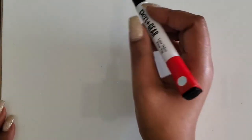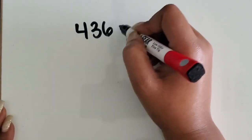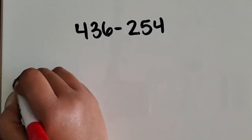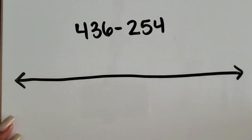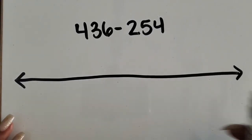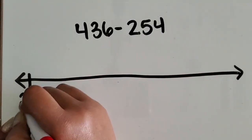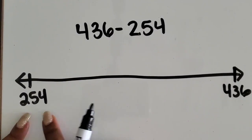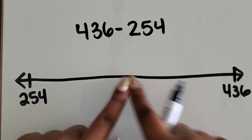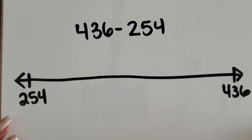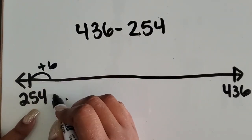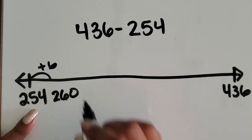Now let's look at how to add in order to subtract. The expression we're using is four hundred thirty-six minus two hundred fifty-four. We're going to use an open number line as our tool. This time I'm going to place both numbers on the number line, start with my smaller number, and count up until I get to my larger number to find the difference. I know I have two hundred fifty-four, and I want to add six to get to a multiple of ten, giving me two hundred sixty.